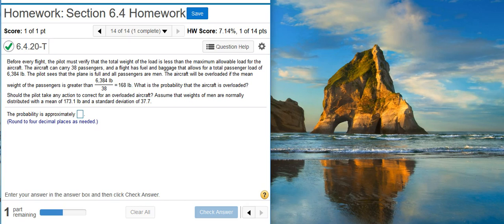The pilot sees that the plane is full, and all passengers are men. The aircraft will be overloaded if the mean weight of the passengers is greater than 6,384 pounds divided by 38, or 168 pounds. What is the probability that the aircraft is overloaded?